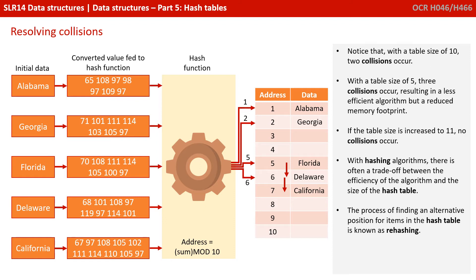Notice that with a table size of 10, we get 2 collisions. With a table size of 5, 3 collisions occur, resulting in a less efficient algorithm but a reduced memory footprint. If the table size were to increase to 11, we'd have no collisions with this example. With hashing algorithms, there's often a trade-off between the efficiency of the algorithm and the size of the hash table. The process of finding an alternative position for items in the hash table is known as rehashing.